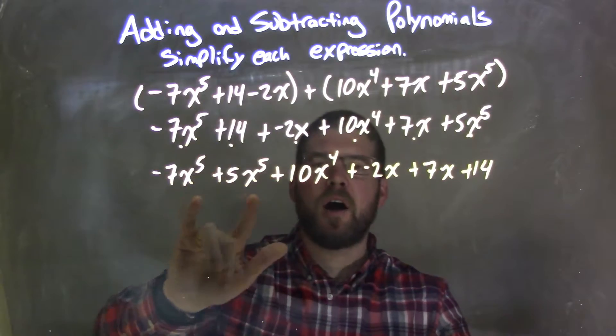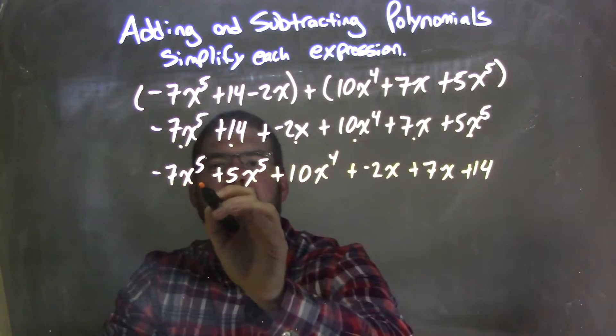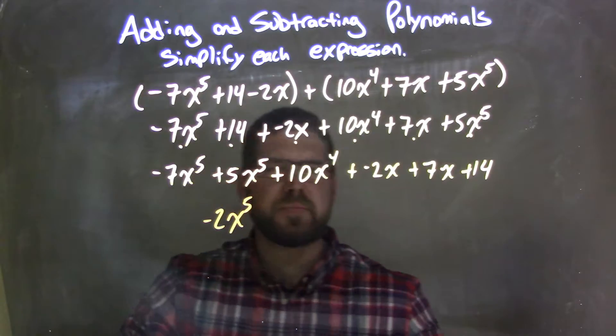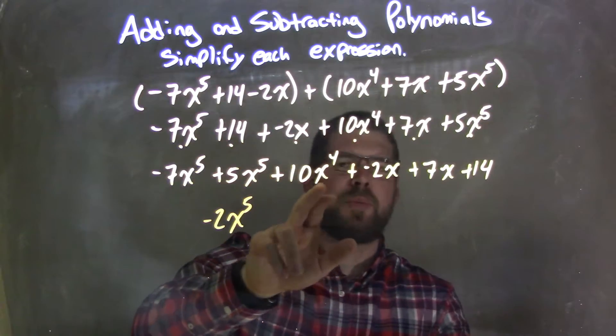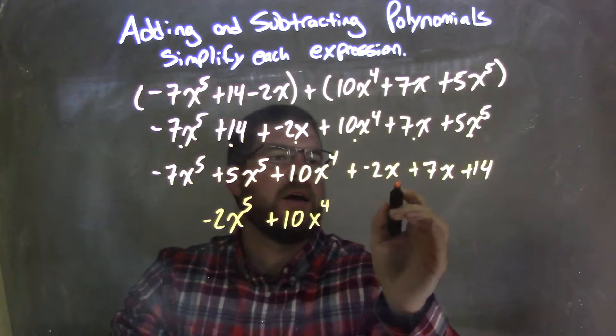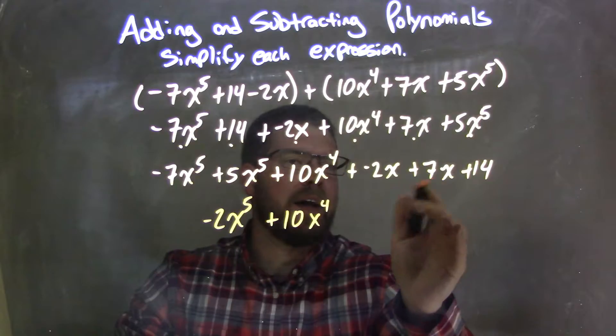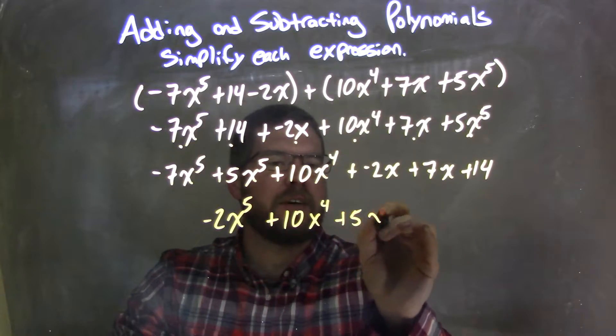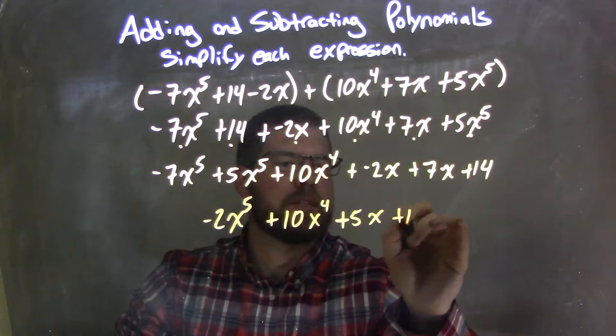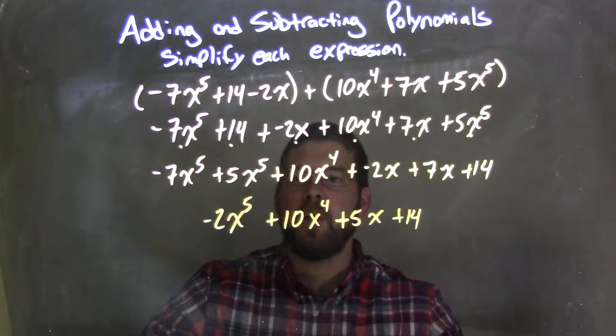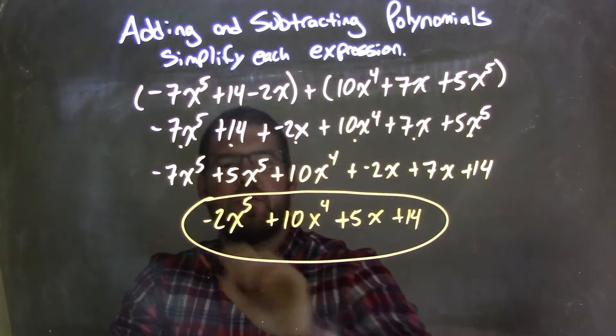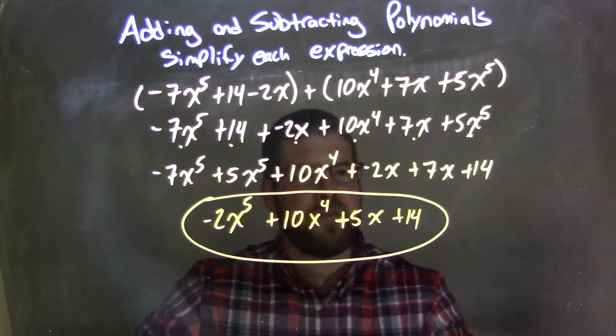Now we're going to simplify. Combine our like terms: -7x^5 + 5x^5 = -2x^5. Do I have anything to the 4th power with it? No, so we just have 10x^4. Then -2x + 7x = 5x. And then lastly, plus 14. So now we have our final answer: -2x^5 + 10x^4 + 5x + 14.